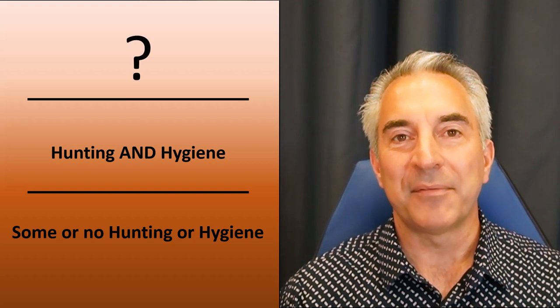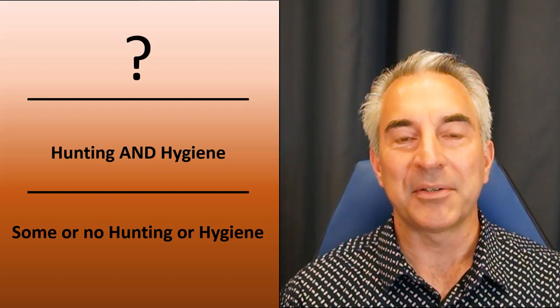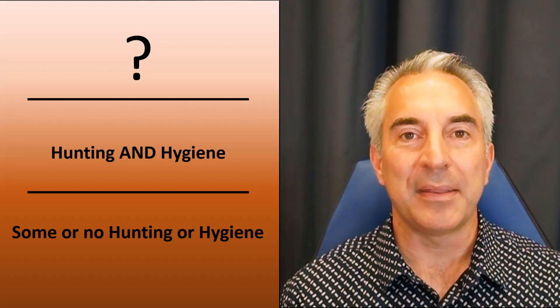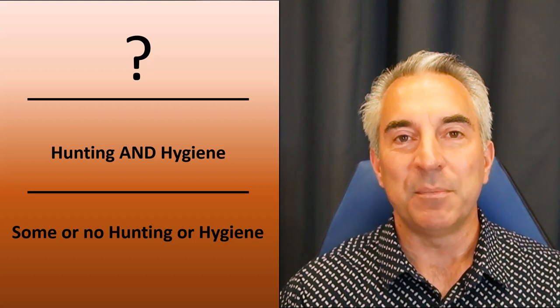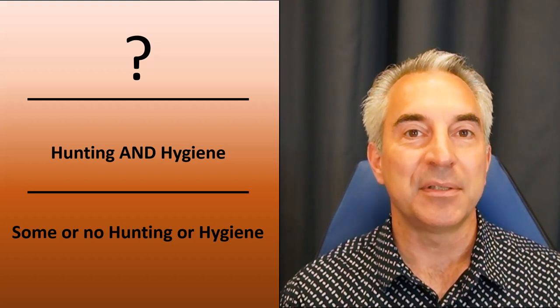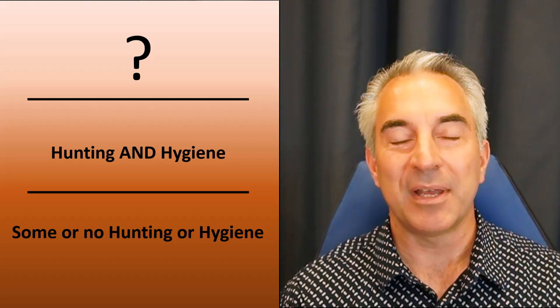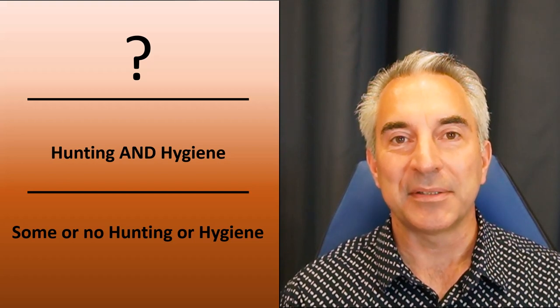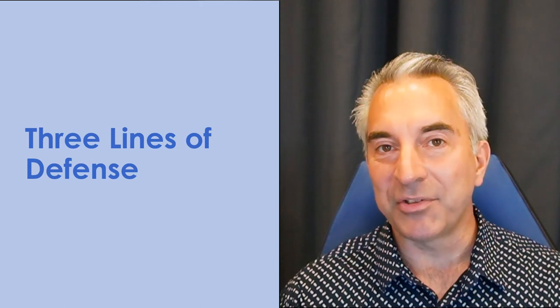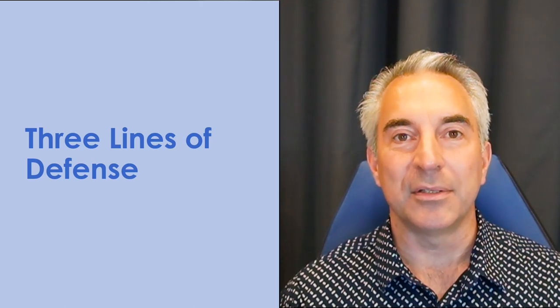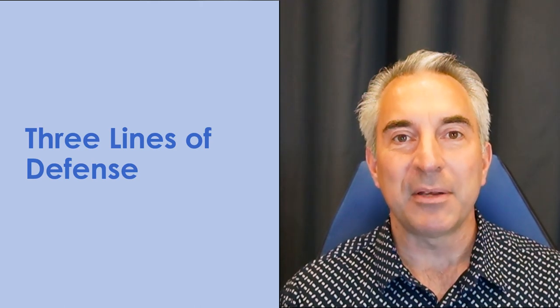So I had a conversation with a financial CISO, and he said that he really felt that the next level to this, and it really resonated with me, was basically having organizations adopt business practices. Now, what does that mean? Business risk practices really means three lines of defense. Now, if you're in financial risk or large, you know, board governance risk, you're familiar with the three lines of risk.